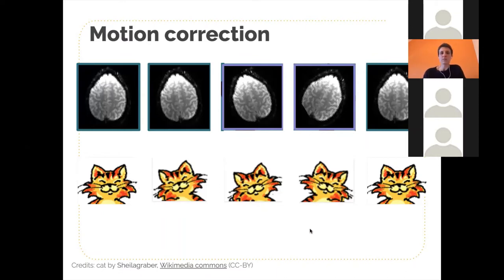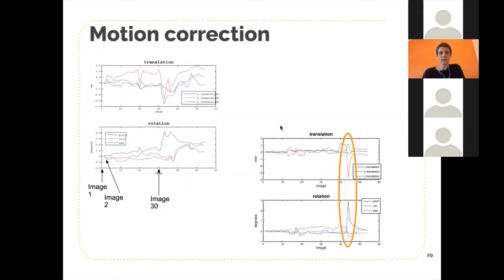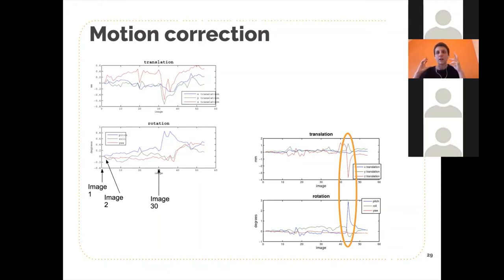Our brains are more like this: the first is straight, then a bit to the left, more to the left, then to the right, and so on. The motion correction algorithm's goal is to put all these brains back in place — tilting the images so that the brains themselves are actually aligned. That's one of the steps we have to perform on the data.